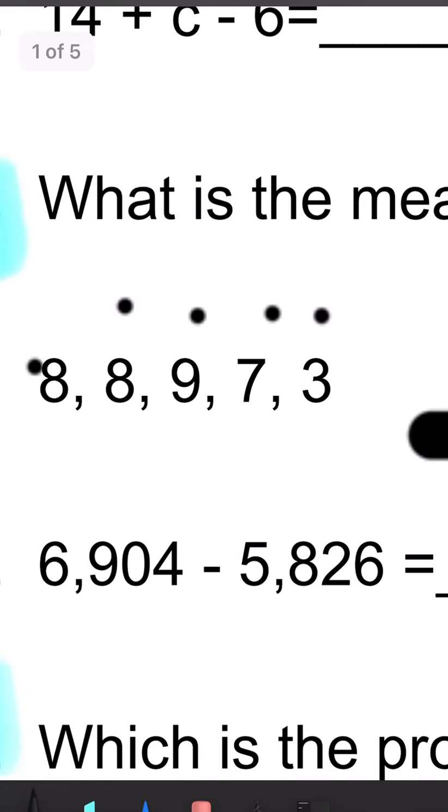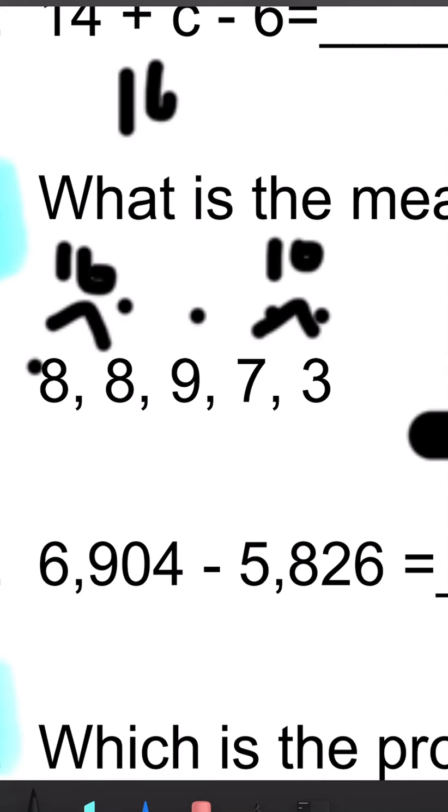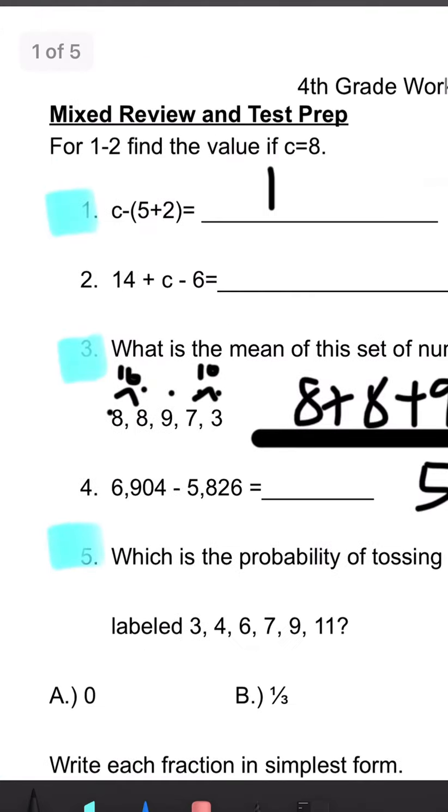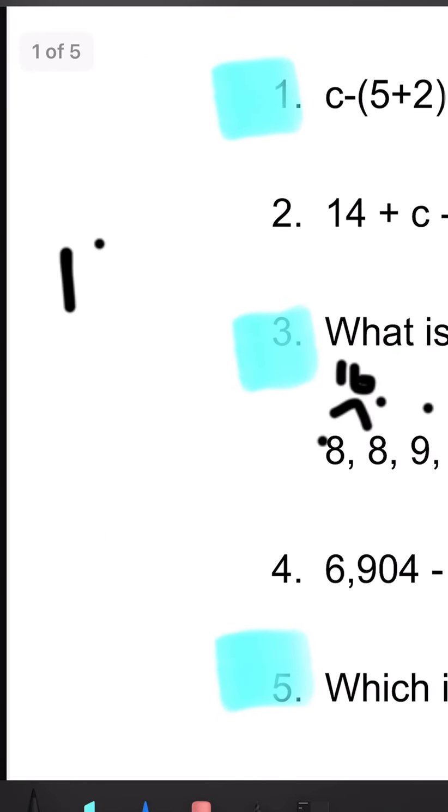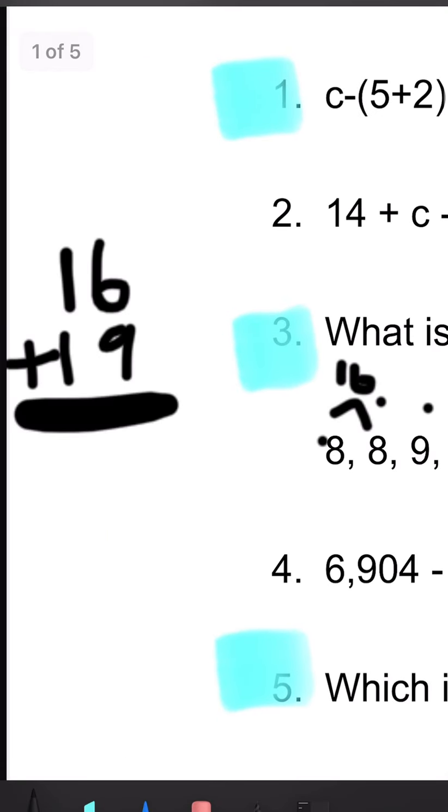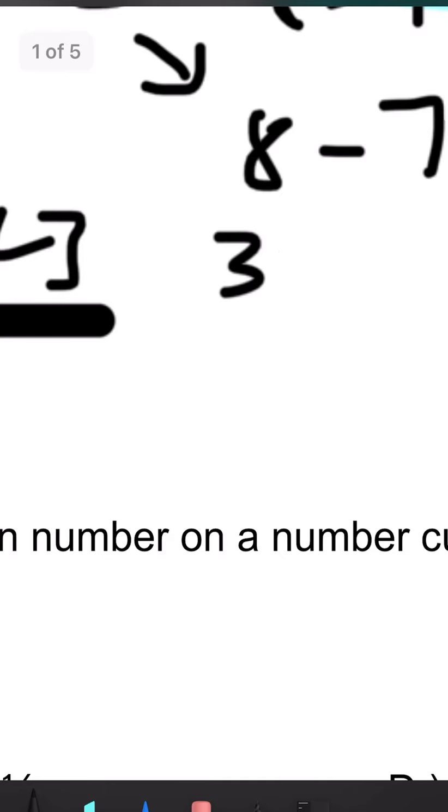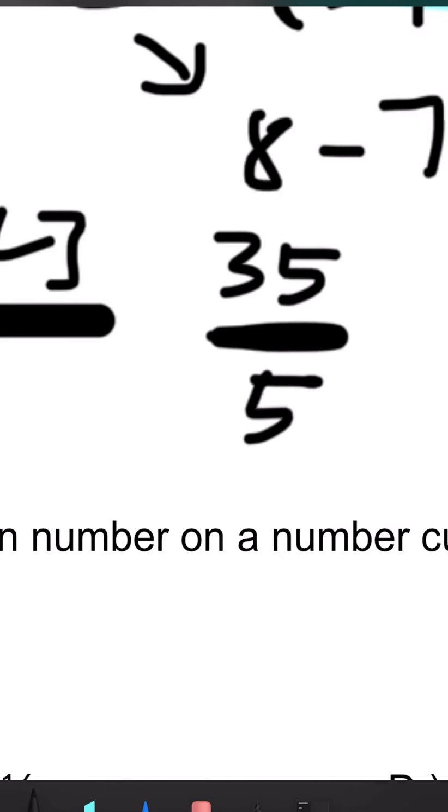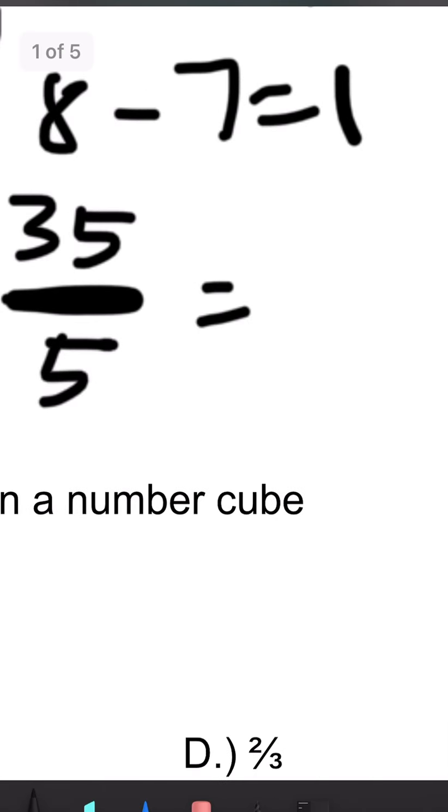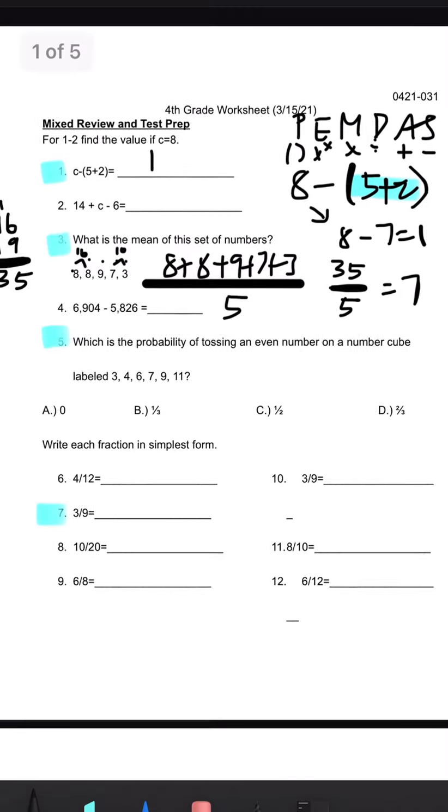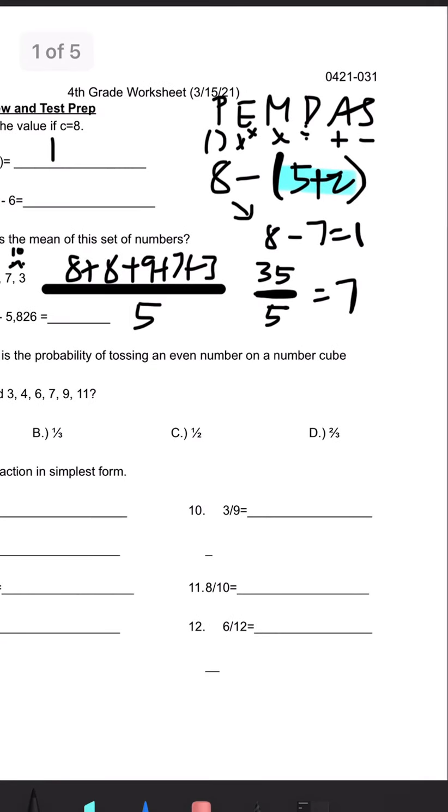And if we add this, we get 16 here, we get 10 here. So we'll be doing 16 plus, let's write this somewhere else so we have a little bit more room. 16 plus 19 and we get 35. So we have 35 over 5 and we know that 35 divided by 5 is 7. So our answer, we'll just box this.